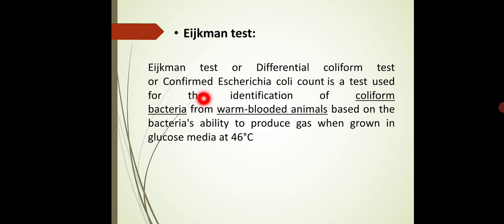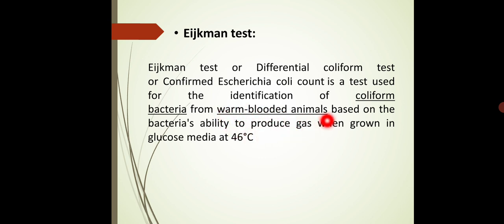This test is used for the identification of coliform bacteria from warm-blooded animals. In this method we detect coliform bacteria, especially E. coli, from warm-blooded animals. Warm-blooded animals are animals which have the ability to regulate their body temperature. Examples include human beings.